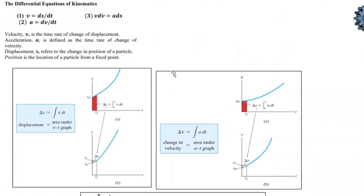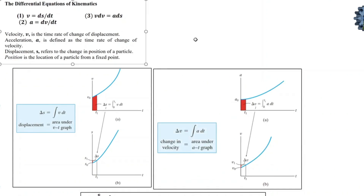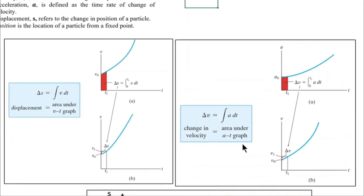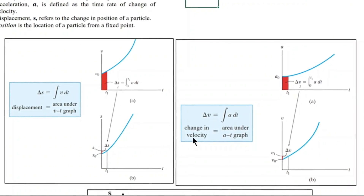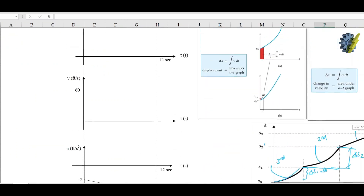Before pursuing that, let me discuss some basic principles we need to know before solving the given problem. We need to know the differential equations of kinematics. We will use these equations to derive the equations of the curve. For the vt and st curves, the relation is that delta s — the displacement — equals the area under the vt curve. Similarly, for the at and v curves, the change in velocity equals the area under the at graph.